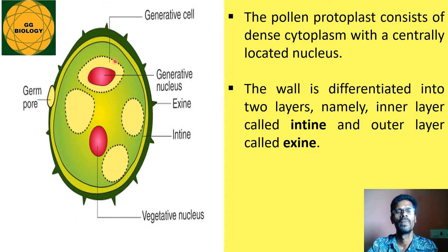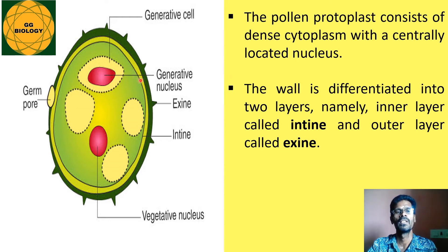Typical pollen grains are usually spherical in nature. They initially contain a single nucleus, which later divides into two nuclei. A large dense amount of cytoplasm surrounds the nucleus. This protoplasm is wrapped by two layers: an inner intine and an outer exine.